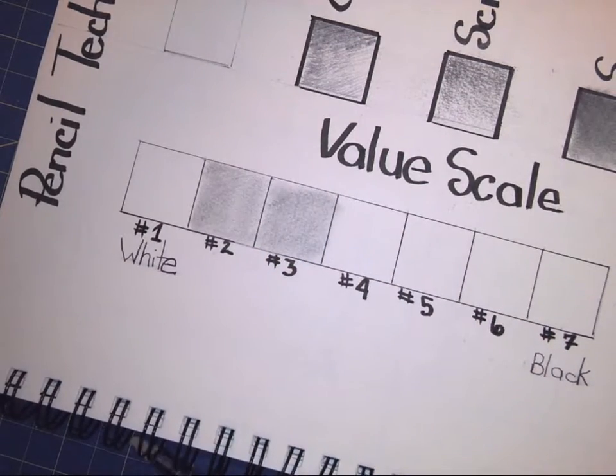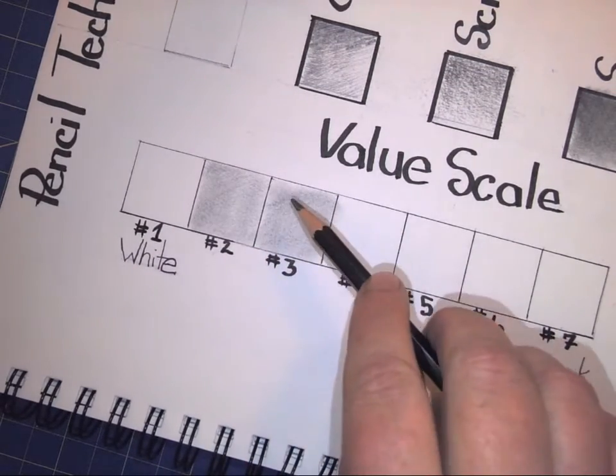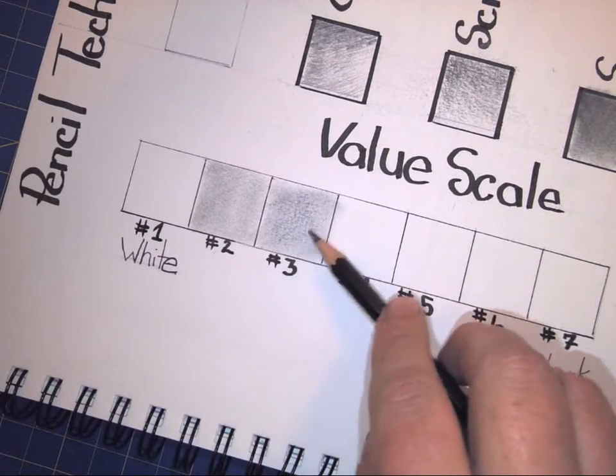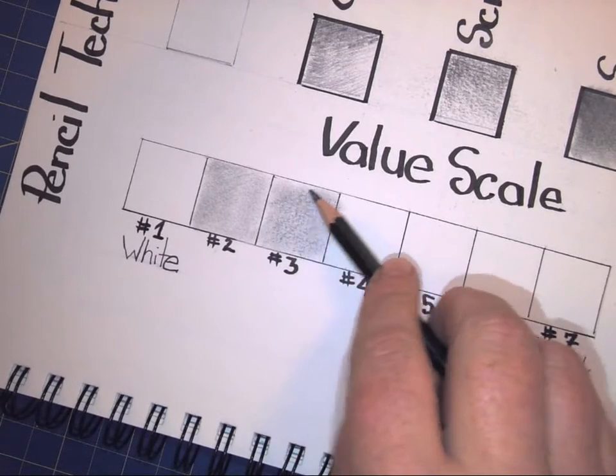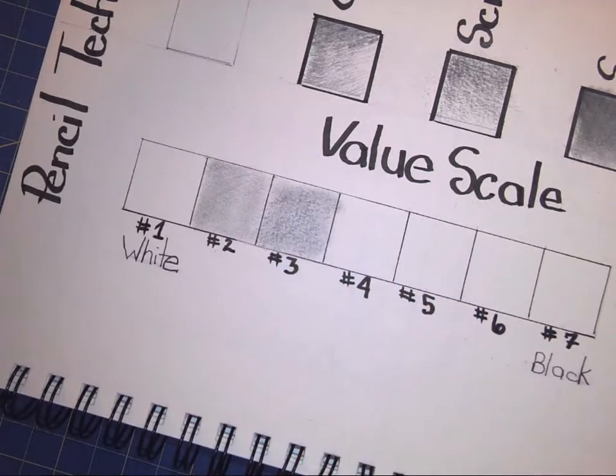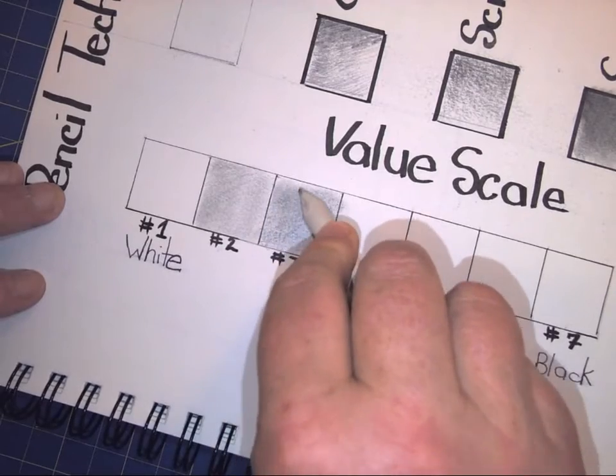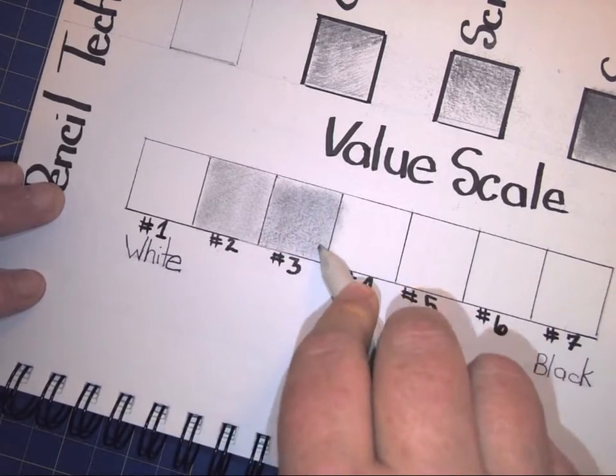It isn't as dark as I would like it, or there isn't as much difference between the two as I would like. So I'm going to lay in a little bit more graphite, and I'm going to go back and use my stomp to blend it in to make sure that there is good definition between the two steps in the scale.